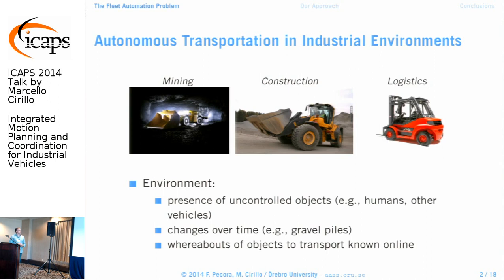The environments, although very different, present some similarities. First, there is the presence of uncontrolled objects — humans or other vehicles — and our partners are adamant that they do not want to get rid of humans in the loop. The environment also changes over time: the wheel loader will find that a gravel pile has changed, or the paper reel is not exactly where expected. This means the whereabouts of objects to transport is only known online and cannot be known precisely beforehand.